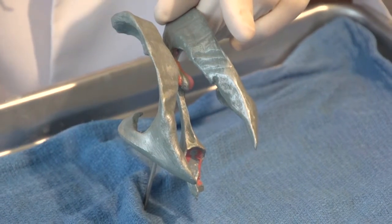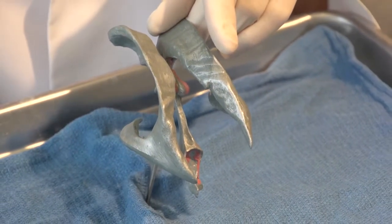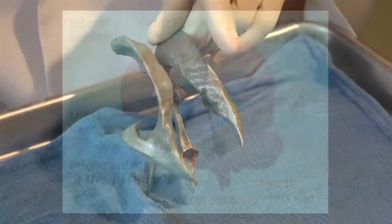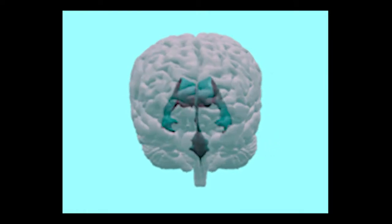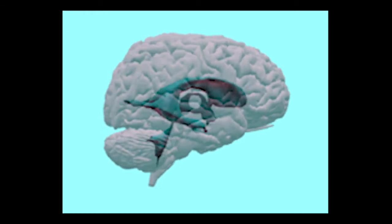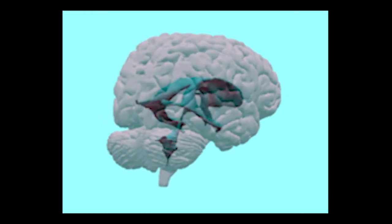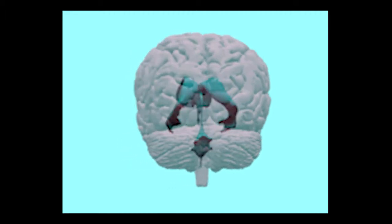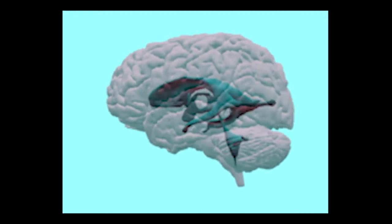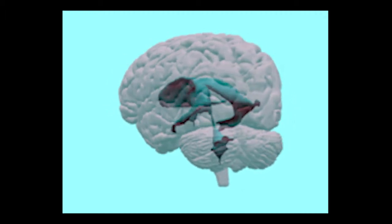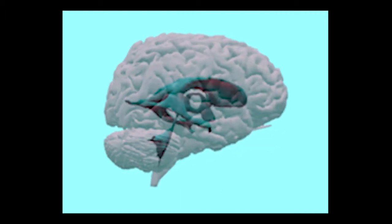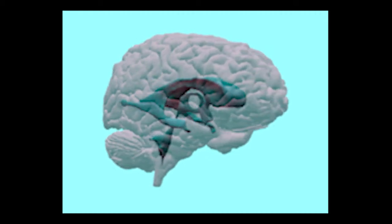Let's look at a three-dimensional reconstruction of the ventricular system made by the University of Washington. In this translucent illustration and animation, you can see the frontal, occipital, and temporal horns. Furthermore, you can see the third ventricle from the lateral view, and in the anterior and posterior view you can see the narrow slit-like third ventricle communicating with the aqueduct and fourth ventricle.